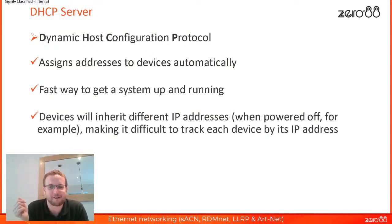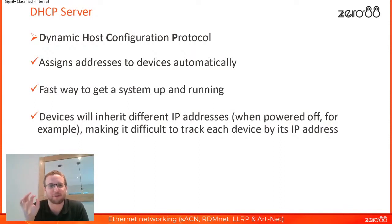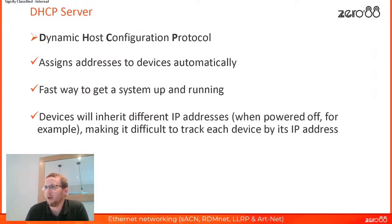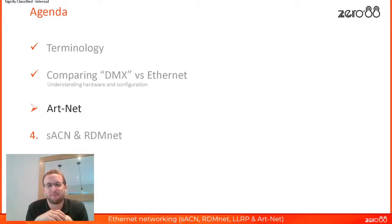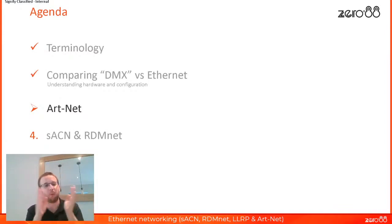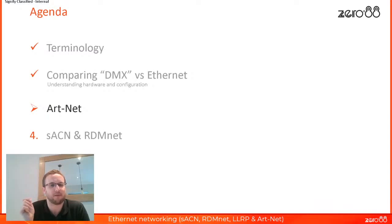There's a lot of debate in the entertainment industry — some say always use DHCP, others say always use static. It's completely up to you. If you like to know exactly what's going on and keep your paperwork in order, use static. If you just want it to work, DHCP will be fine. That's the end of the DMX versus Ethernet comparison section. We're now going to talk about Art-Net, then Streaming ACN and RDMnet.